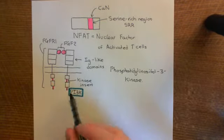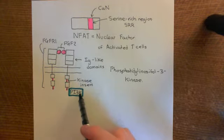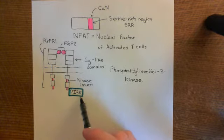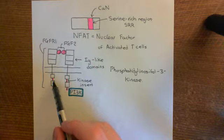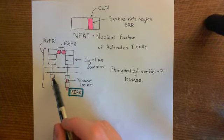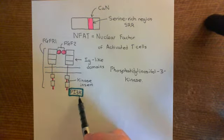We have these phosphotyrosine residues on the intracellular aspect of our receptor tyrosine kinase, and they are going to recruit the phosphatidylinositol-3 kinase enzyme. This is an enzyme that's usually within the cytoplasm of the cell. Just like phospholipase C-gamma, which came to the membrane associated with those phosphotyrosine residues and then acted on the phosphatidylinositol-4,5-bisphosphate in the membrane, PI3 kinase is going to do a similar thing.